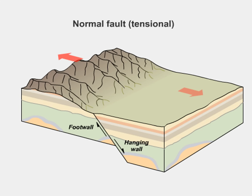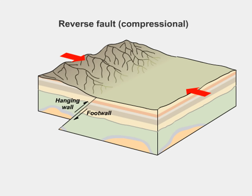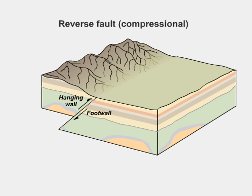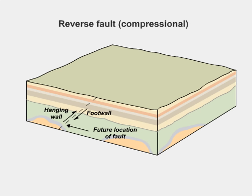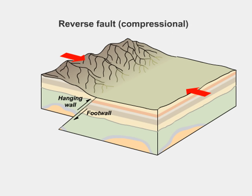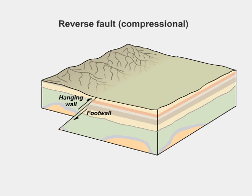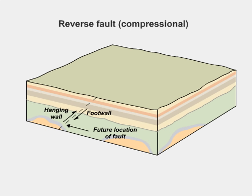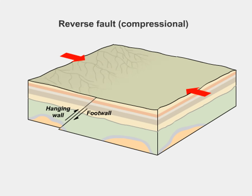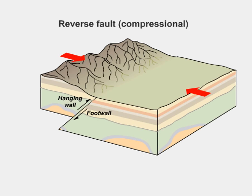A reverse fault develops from compressional stress. Movement along the reverse fault is also predominantly vertical, although in a type of reverse fault known as an overthrust fault, the up-thrown block overrides the down-thrown block at a very low angle. In the animation, click reverse fault and then play to begin. As the landscape is compressed, one side of the fault is pushed up over the other side. Once faulting ends, erosion gradually wears down the uplifted mountain.